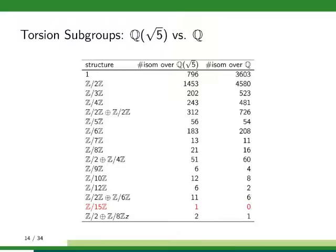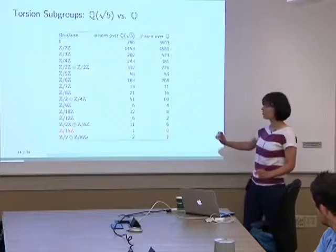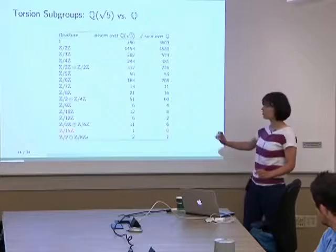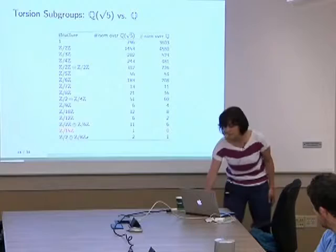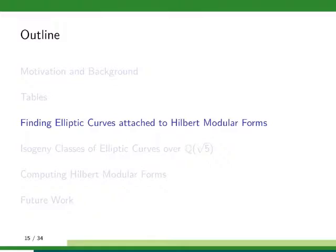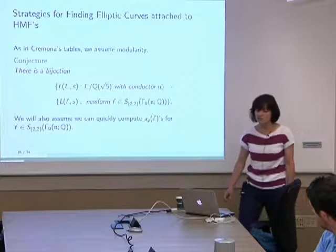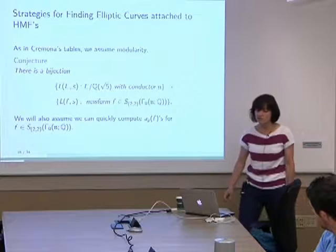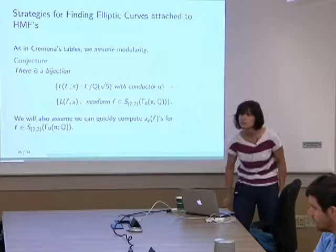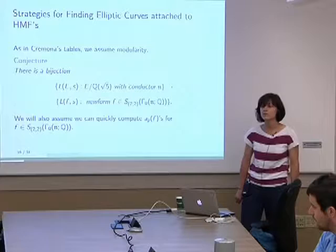We can also look at the isogeny degrees — 17 does not occur in the table, but these are the counts we have so far. Looking at the torsion subgroups, we get another torsion subgroup that doesn't occur over Q, and moreover there's only one curve over Q(√5) that will even have this torsion subgroup.